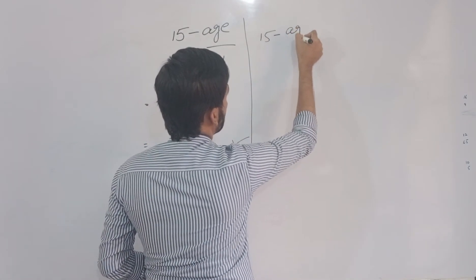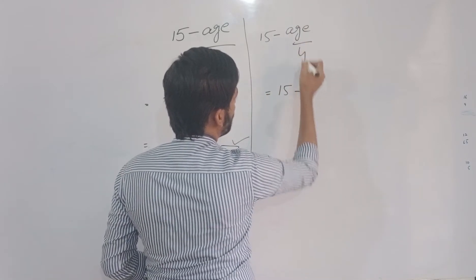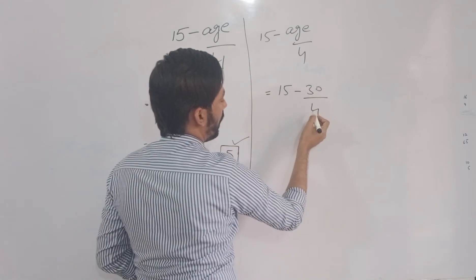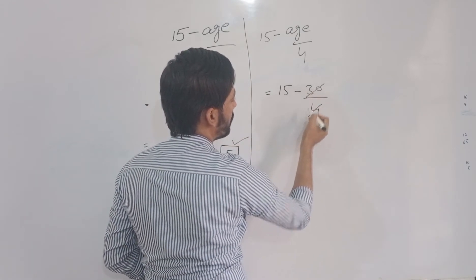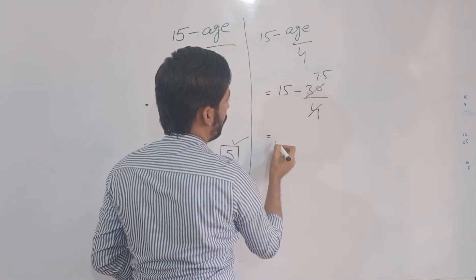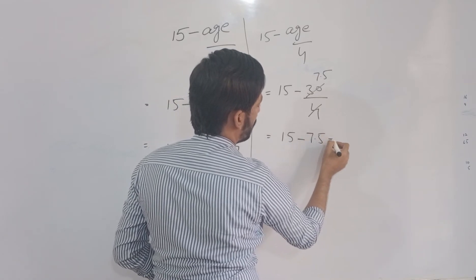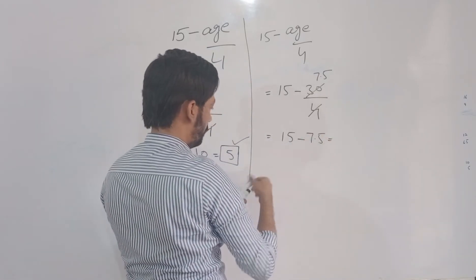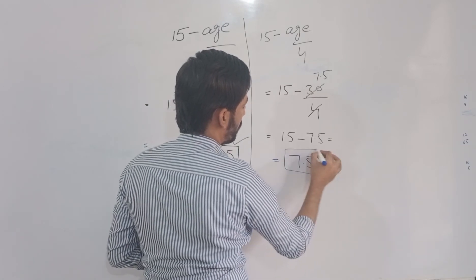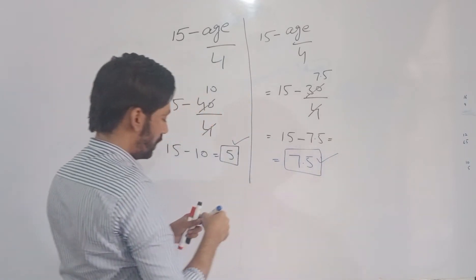Now let's solve another example. Suppose the age is 30 years. Using the formula: 15 minus 30 over 4. Dividing 30 by 4 gives 7.5 — you can use a calculator if you want. Then 15 minus 7.5 equals 7.5. So at 30 years of age, the amplitude of accommodation is 7.5 diopters. This is how you can find the amplitude of accommodation using this simple formula.